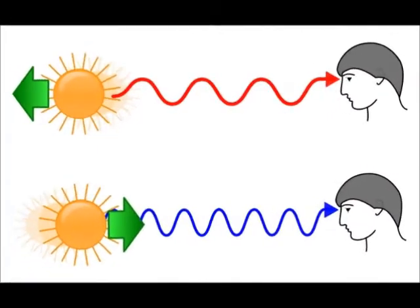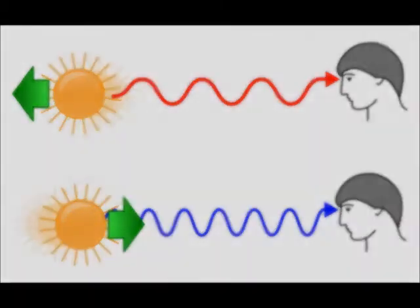This happens with light too. When a light source moves away from us, the wavelengths become longer and the frequencies become lower — this shifts the light towards the red end of the spectrum and is called redshift. When a light source moves towards us, the opposite happens and the light undergoes blueshift.